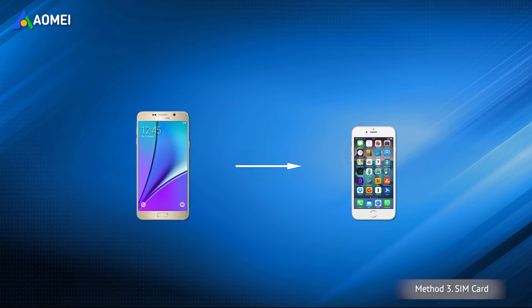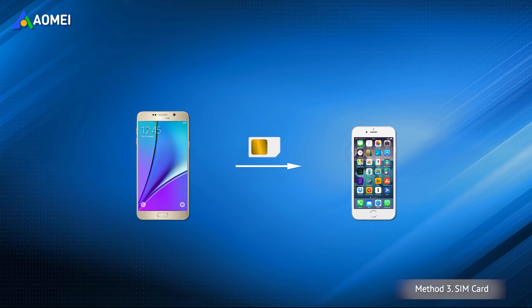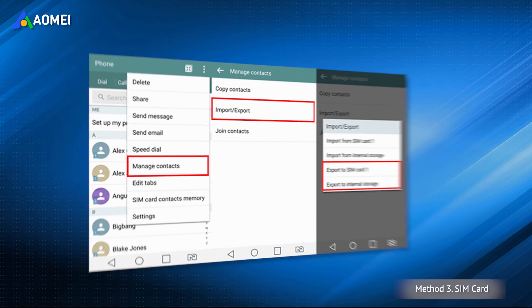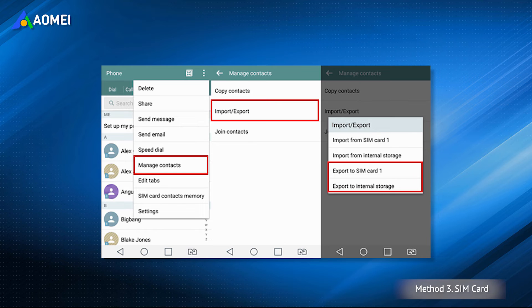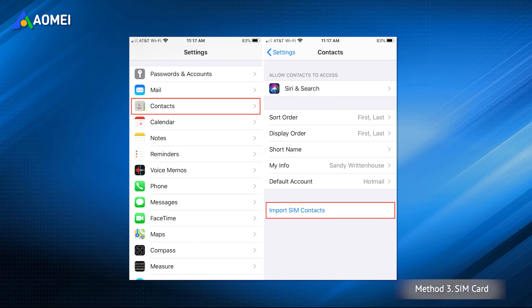If you don't want to use any apps, you can also use a SIM card to copy contacts from Samsung to iPhone. Note that since SIM cards can store large amounts of data, additional information about your contacts may be lost in the transfer process. Go to the Contacts app on your Samsung, tap the three-dot menu, select Import Export Contacts, and click the Export to SIM card option. Then insert the SIM card into your iPhone, go to Settings, tap Contacts, and tap Import SIM Contacts.